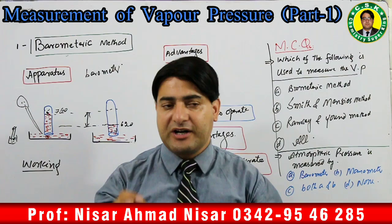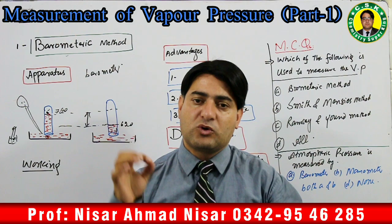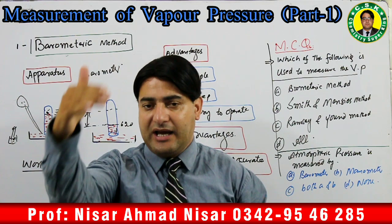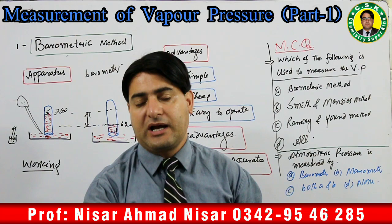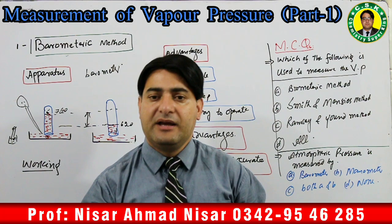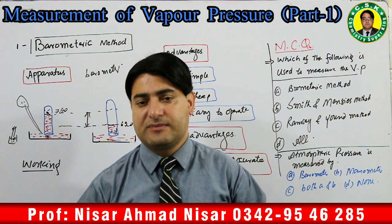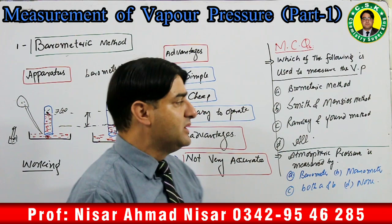Drawback kya hai? Yeh method bahut zyada accurate nahi hai. Chunke is method mein air ko exclude karne ka koi system mojood nahi hai — liquid drop ke saath air bhi shamil ho sakti hai. Jab liquid drop upar jaayega to air bhi saath ja sakti hai, aur jo downward pressure mercury ko push karega woh liquid vapors ke saath saath air bhi karti hai. Is tarah hamaara result bahut zyada correct nahi ho sakta. Yeh is method ka drawback hai.